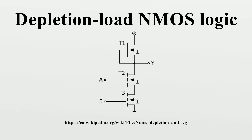Depletion mode N-type MOSFETs as load transistors allow single voltage operation and achieve greater speed than possible with pure enhancement load devices. This is partly because the depletion mode MOSFETs can be a better current source approximation than the simpler enhancement mode transistor, especially when no extra voltage is available. The inclusion of depletion mode NMOS transistors in the manufacturing process demanded additional manufacturing steps compared to the simpler enhancement load circuits, because depletion load devices are formed by increasing the amount of dopant in the load transistors' channel region to adjust their threshold voltage. This is normally performed using ion implantation.